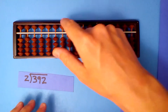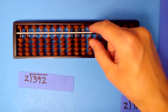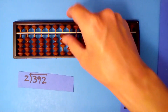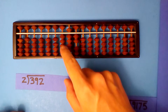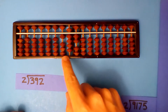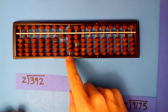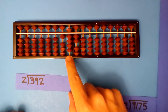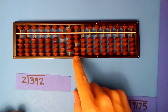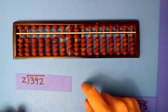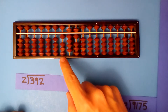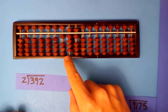Another example: what's half of 392? Half of 3 is 1 with 1 left over, so we take half of 19 — it's 9 with 1 left over. And now we take half of 12, which is 6. Half of 392 is 196.